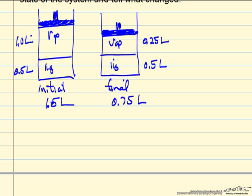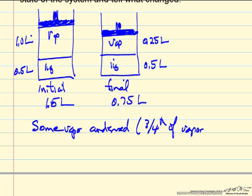And so what this means is that some vapor condensed, about three fourths of the vapor since we went from 1 liter to approximately 0.25 liters, and the liquid volume increased marginally, but we're still at vapor-liquid equilibrium because we have two phases and the temperature was constant.